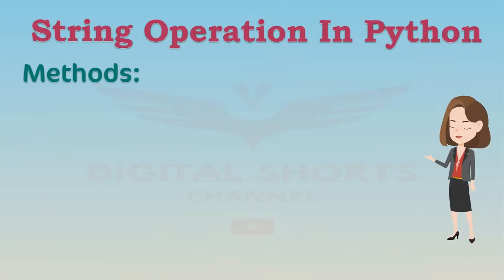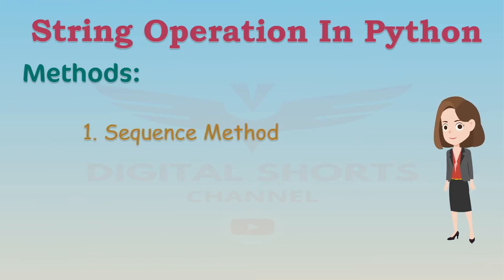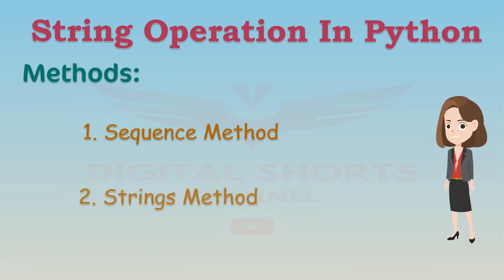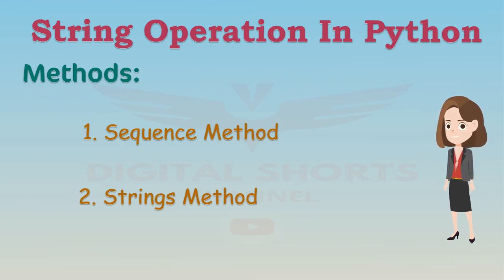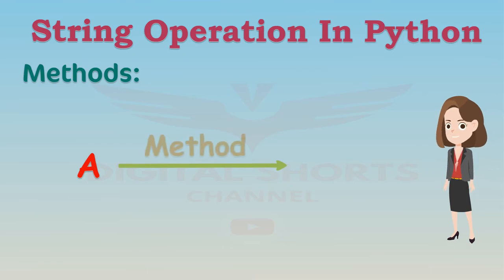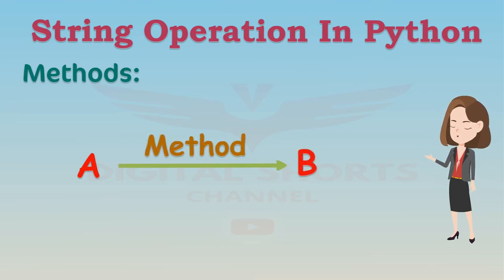Now let's take a look at string methods. Strings are sequences, and as such, have methods that work on lists and tuples. Strings also have a second set of methods that just work on strings. When we apply a method to the string A, we get a new string B that is different from A.